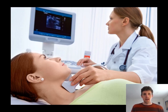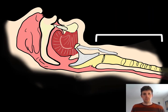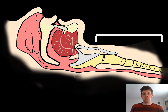When evaluating the airway anatomy to prepare for a cricothyroidotomy, you want to orient the probe in a cranial-caudal direction. This will give you a longitudinal image of the airway as seen in this cartoon anatomy. We're going to be focusing our ultrasound over the neck primarily.